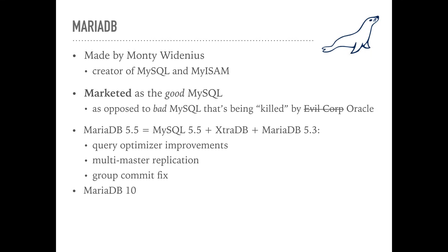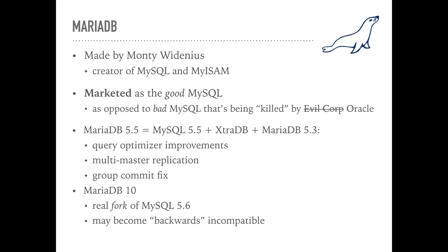MariaDB 10, on the other hand, is very different from all of the other variants of MySQL in that it has started diverging from the upstream MySQL. It is what would be called a real fork, rather than a spoon. MariaDB used MySQL 5.6 at its foundation, but you should expect that MariaDB will not be backwards compatible with MySQL 5.6, 5.7, or any later MySQL versions.